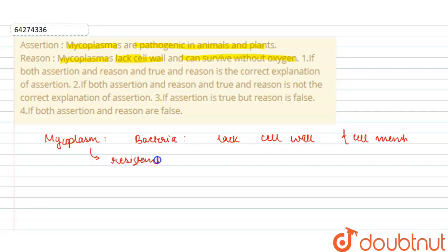In mycoplasma, they can survive without oxygen. They can survive in the environment without oxygen, that is anaerobic conditions, even in anaerobic conditions.